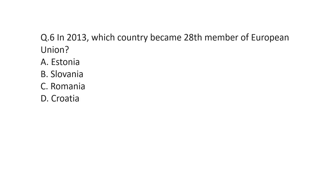Question number six: in 2013, which country became the 28th member of the European Union? Option A is Estonia, B is Slovenia, C is Romania, or D is Croatia. The correct answer is D, Croatia.